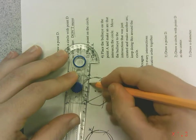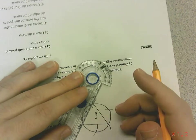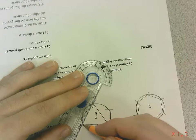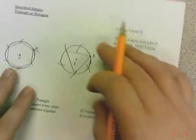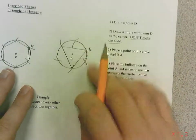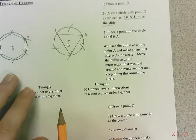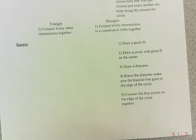We're going to connect those two, then skip one and connect those two, and then connect the last pair. If you do it right, you should end up with a triangle in your circle. So there's those two shapes.